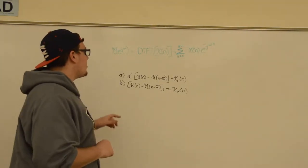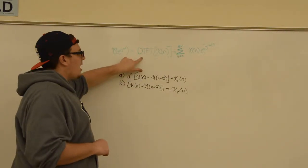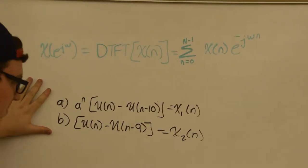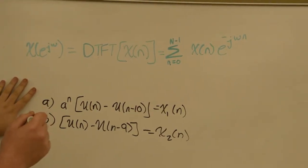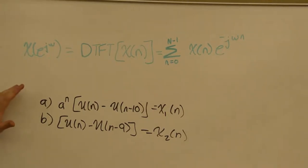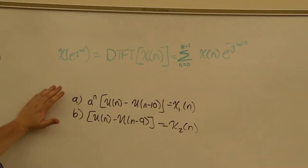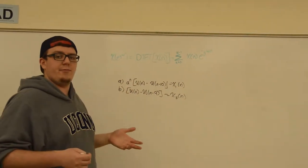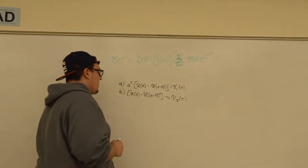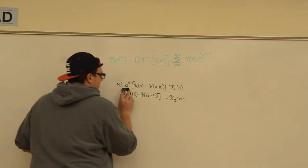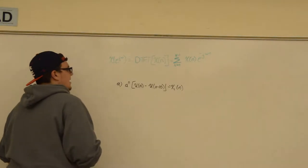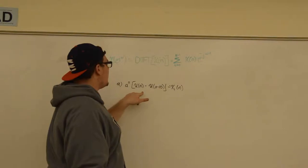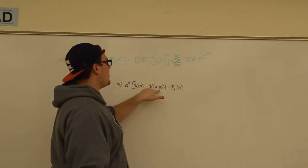What we're going to do is find the discrete time Fourier transform of these two functions, and we're going to see if we can relate them to things we already know via time shifting properties. The time shifting property is very similar to the time shifting property for the original Fourier transform. So first we're going to deal with the first one: x1(n) = a^n * u(n) - u(n - 10).